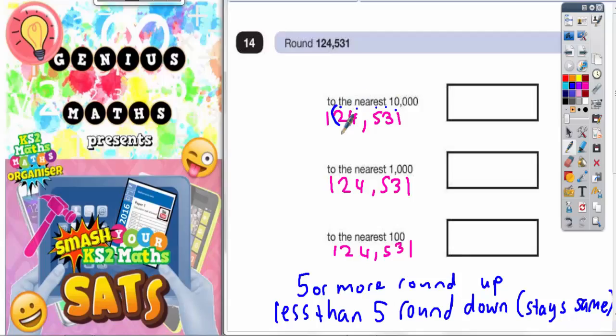So the 10,000th digit is the 2. And the digit used to decide on what happens to the 2 is the one after that, which is the 4. Now if the decider is 5 or more, you would round the 2 up. If the decider is less than 5, you would round the 2 down.